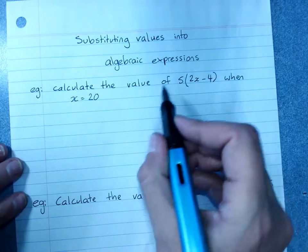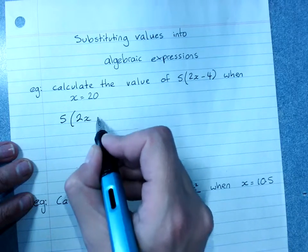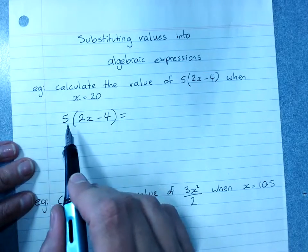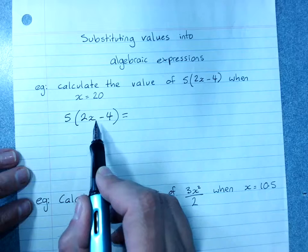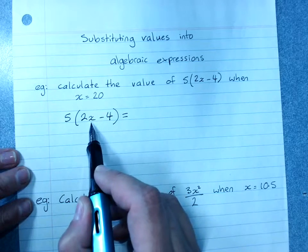So for perfect working, we'd start by writing our expression, 5 outside of 2x minus 4 equals, and then we're going to rewrite it, but we're going to put the value of x in in the correct way, where the x is.